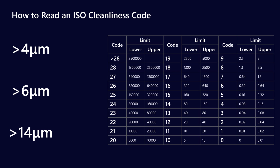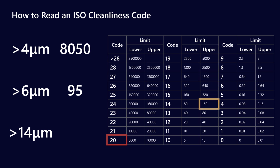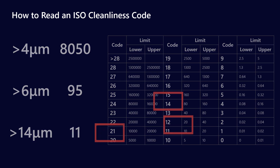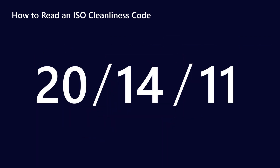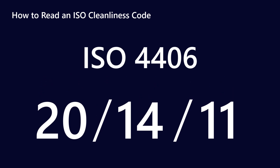In a previous video we talked about how to read an ISO cleanliness code. As an example, with 8050 particles above 4 micron, I go down to the table — 8050 is between 5000 and 10000, giving a first number of 20. Likewise, 95 is between 80 and 160, so the second number is 14. And for 14 microns, that's between 10 and 20, so the third number is 11, giving my three-number ISO cleanliness code. That video described ISO 4406, which is not a test method — it's actually a classification system for cleanliness.